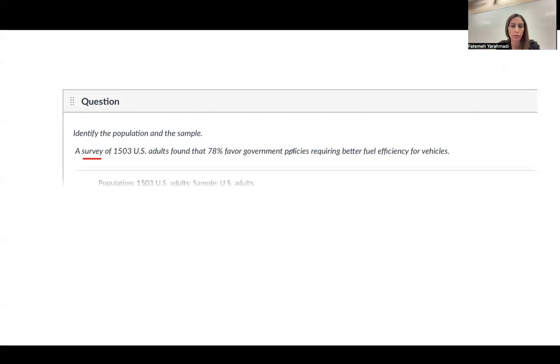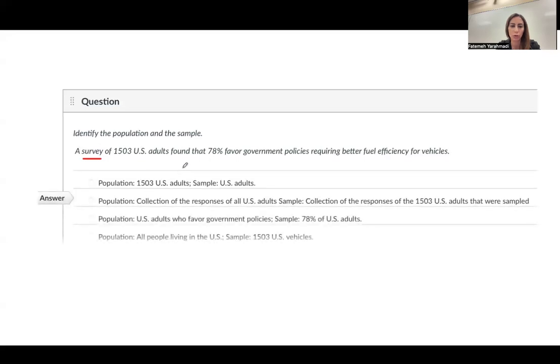So let us take a look at the options. The population is 1,503 U.S. adults. No, it's not. Population includes everybody. Population is the collection of responses of U.S. adults, and sample is this sub-collection, which is 1,503. This is the correct answer.